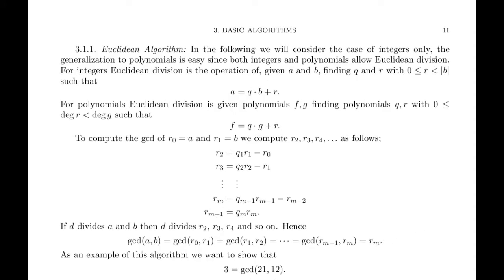3.1.1 Euclidean algorithm. In the following, we will consider the case of integers only. The generalization to polynomials is easy since both integers and polynomials allow Euclidean division. For integers, Euclidean division is the operation of given a and b, finding q and r with 0 less than or equal to r less than absolute b, such that a equals q times b plus r.